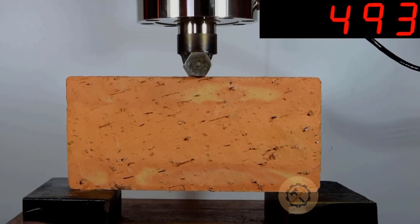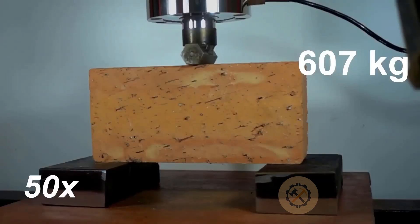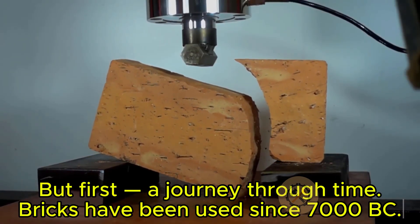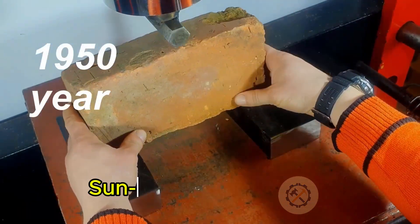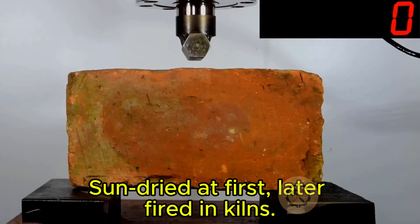The older brick in this test was handcrafted sometime in the 19th century. It likely came from a kiln that used coal or wood as fuel. The clay was often mixed by hand, shaped in wooden molds, and dried slowly before firing.